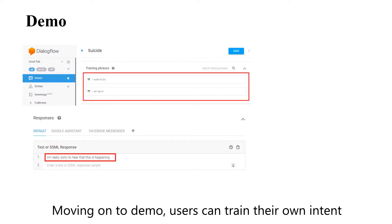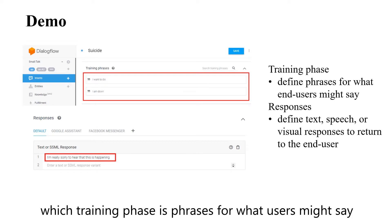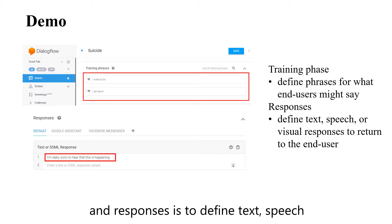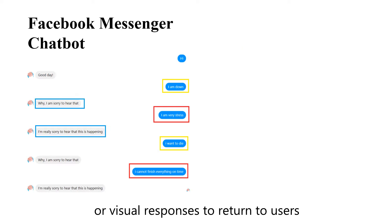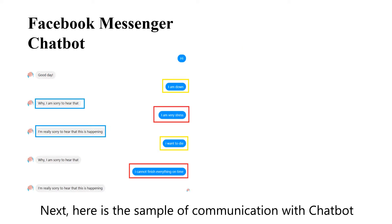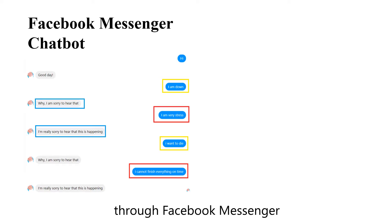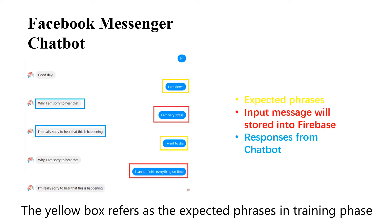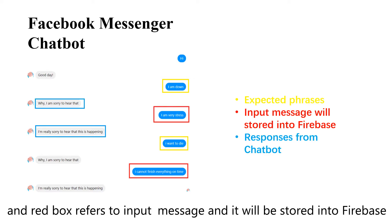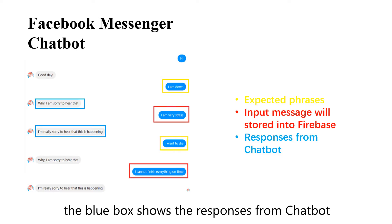Moving on to the demo — users can train their own intent. The training phase consists of phrases for what users might say, and responses define the text, speech, or visual responses to return to users. Here is a sample of communication with the chatbot through Facebook Messenger. The yellow box refers to the expected phrases in the training phase, the red box refers to the input message which will be stored into Firebase, and the blue box shows the responses from the chatbot.